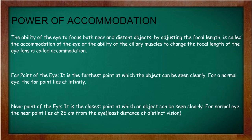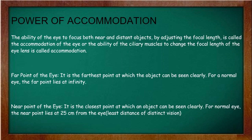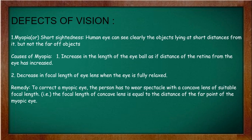The far point of the eye: when you look at the sky at night you see objects like clouds at a very large distance — that distance is considered infinity. The far point of the eye is the farthest point at which an object can be clearly seen; for a normal eye it is infinity. The near point of the eye is the closest point at which an object can be seen clearly. For a normal eye, the near point is 25 cm — this is called the least distance of distinct vision.